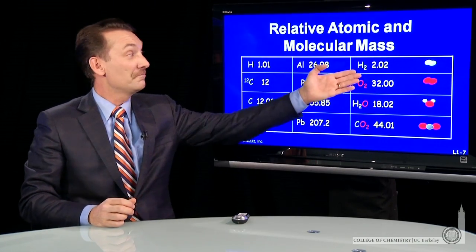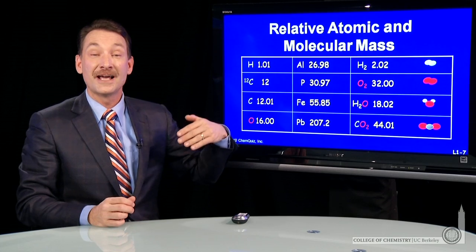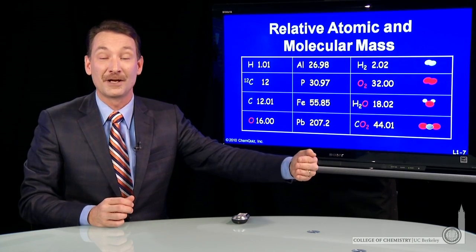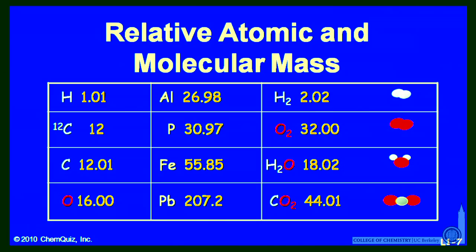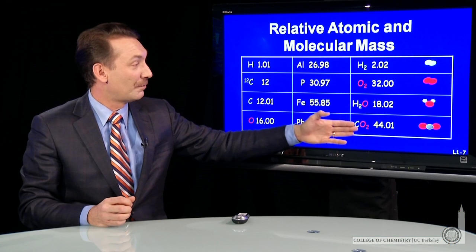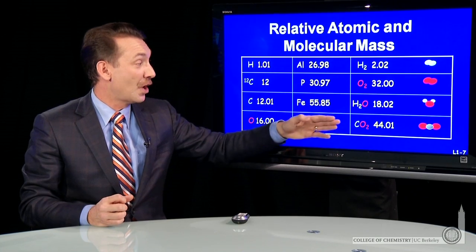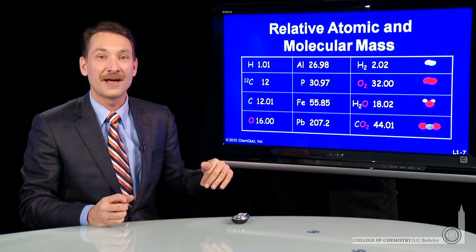I can do this with the molecules themselves. In fact, I can add up the atomic relative masses to get the molecular relative masses. Simplest case: hydrogen, H2 — there are 2 hydrogen atoms, so it has twice the relative mass of hydrogen atoms, or 2. Oxygen: 32 — oxygen molecules are twice as massive as oxygen atoms. Here are a couple of molecules: H2O and CO2, water and carbon dioxide.